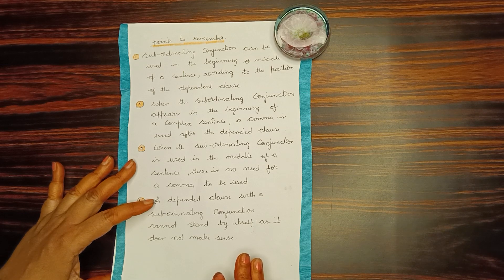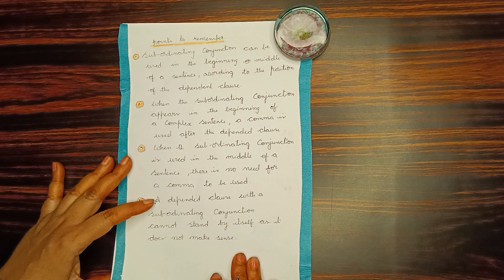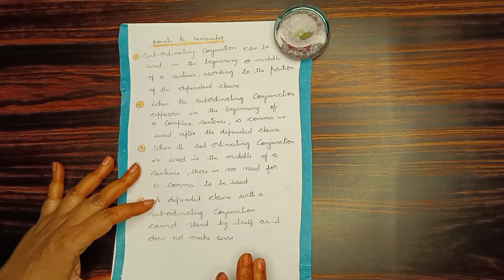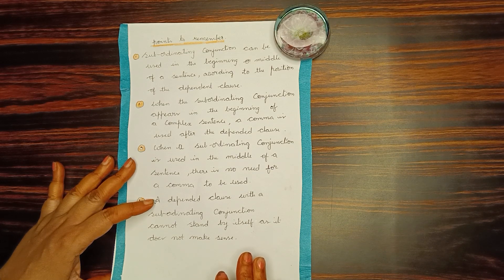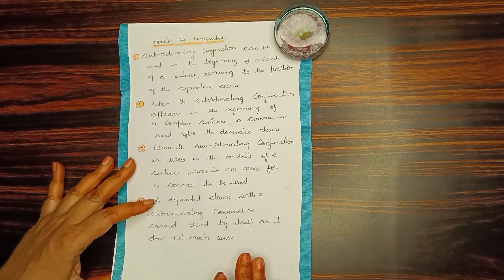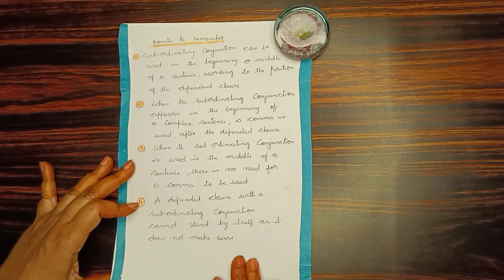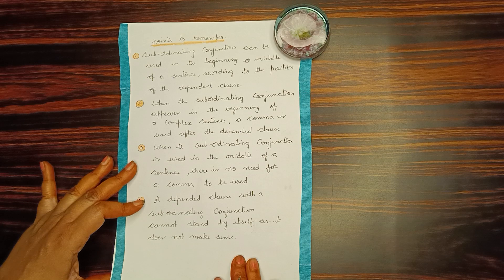Points to remember for subordinating conjunctions: Subordinating conjunction can be used in the beginning or middle of the sentence according to the position of the dependent clause. I once again repeat, subordinating conjunction can be used in the beginning or middle of the sentence according to the position of the dependent clause.